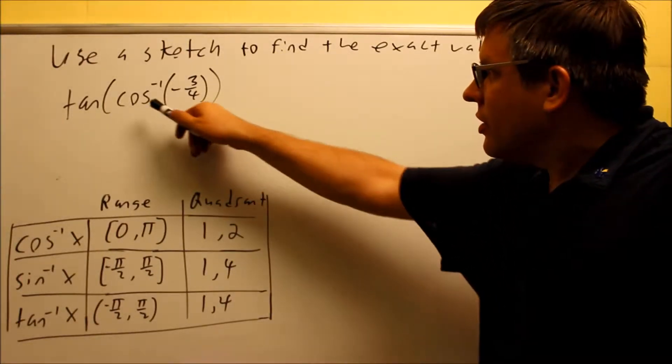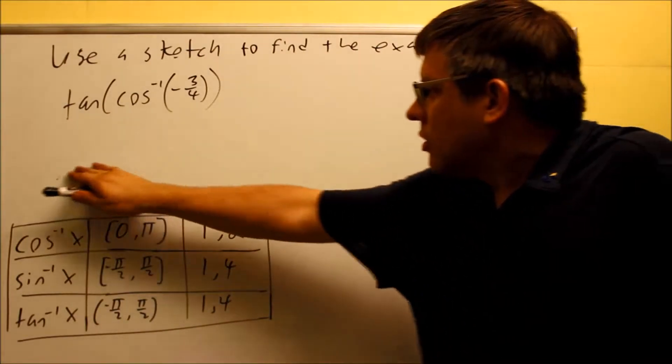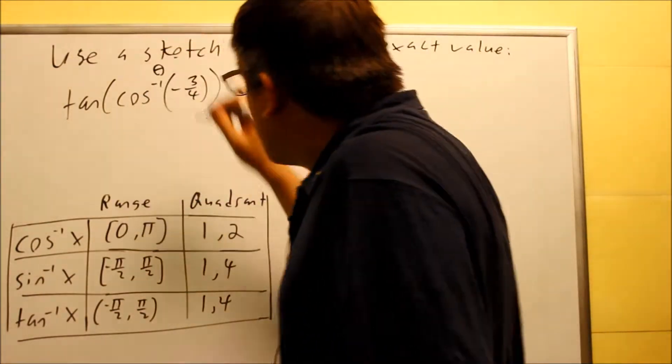Okay, we have tangent. We have an inverse cosine on the inside this time. So what we need to do again is set this up first.